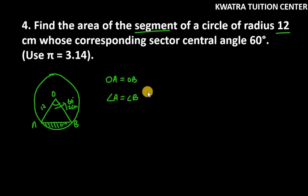Why? Because angles opposite to equal sides are equal. If you have to apply angle sum property here, so it will be angle A plus angle O plus angle B is equal to 180 degrees. This is angle sum property.